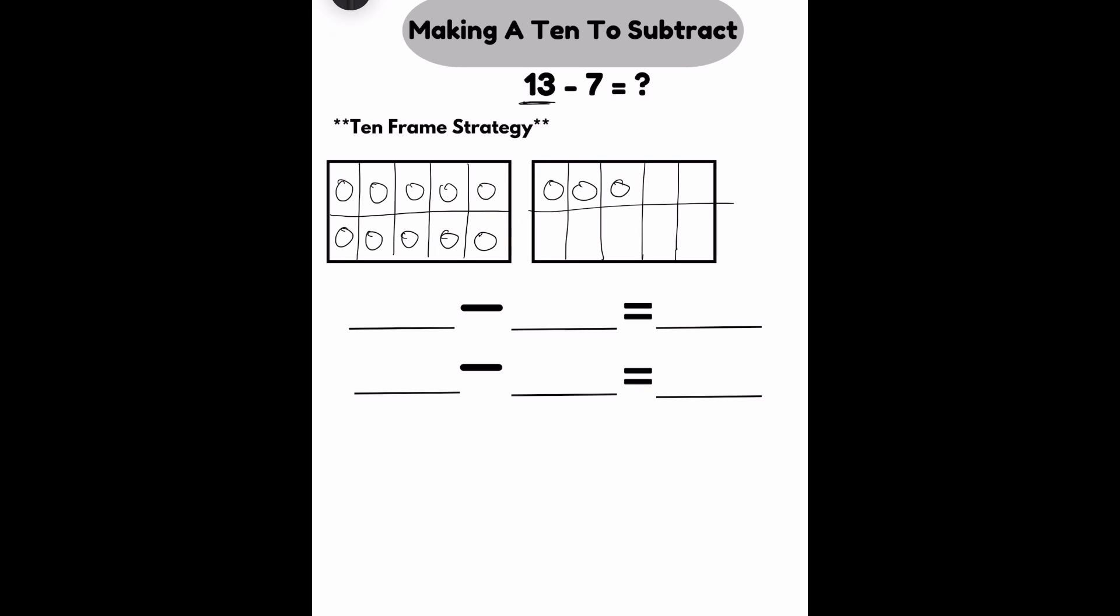But now I'm subtracting. So I can't add more to this. I need to take some away. And I know I need to take 7. I like to get in the habit and take from the frame that has the least and then work my way backwards. So I'm going to start shading in from this frame and work my way backwards. 1, 2, 3, 4, 5, 6, 7.